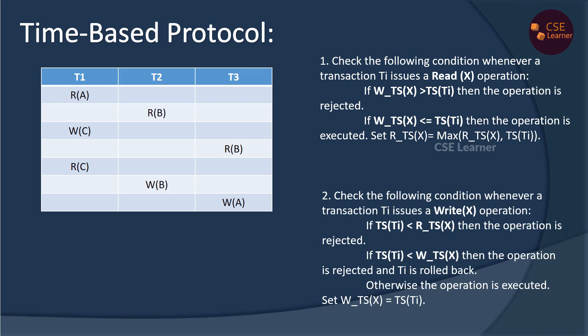When the transaction is executed, we check these conditions for read and write operations. In the transactions, variables a, b, and c each have a read timestamp and a write timestamp. These are initialized to zero.